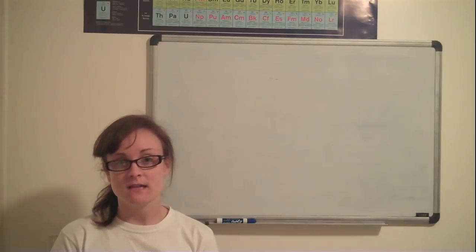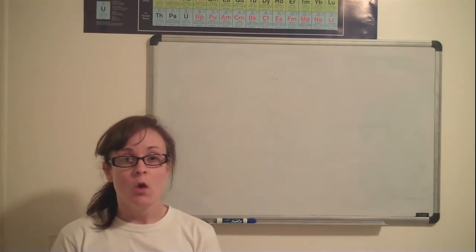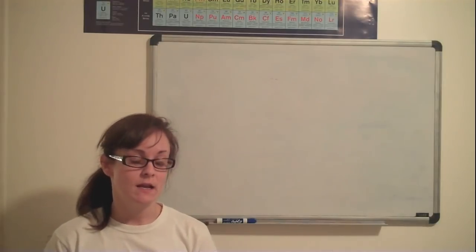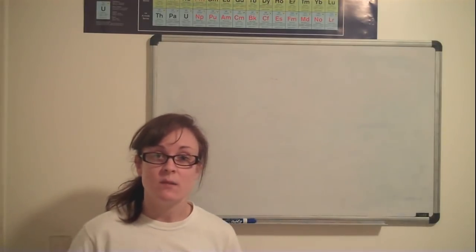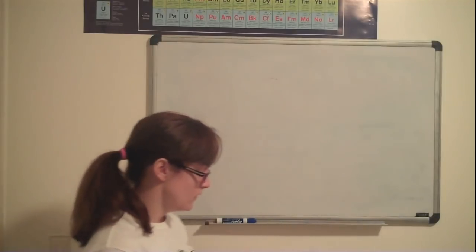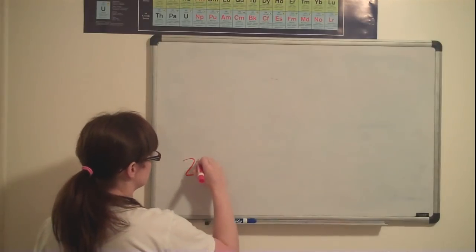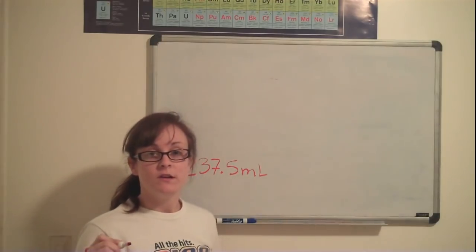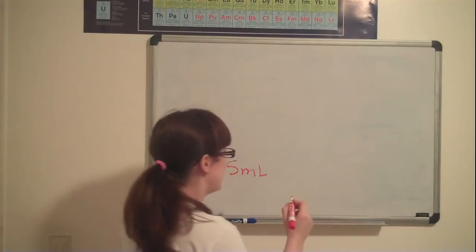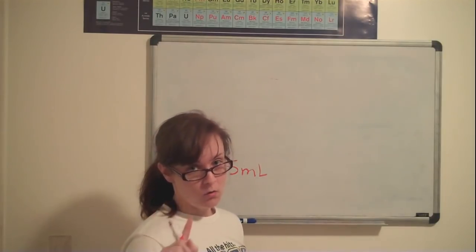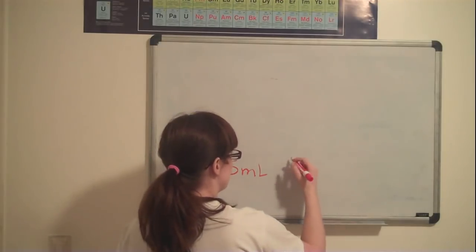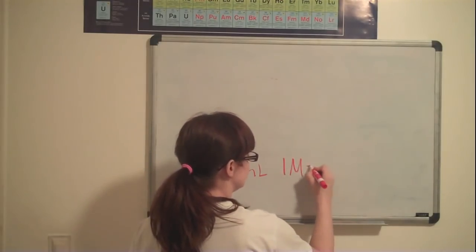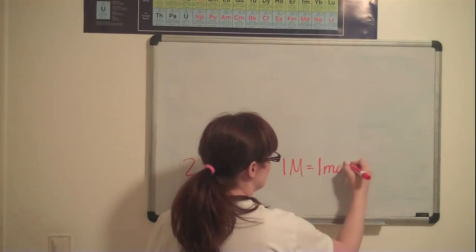I'm going to be showing you how to calculate the mass of Kool-Aid you will need in order to make one cup of a one molar solution of Kool-Aid. So let's look at the numbers that were given to us in Step 1. We know that we need to make 237.5 milliliters of the solution, which is one cup. We know that the molarity needs to be one, and that M stands for moles per liter. So what one molar actually means is one mole per liter.